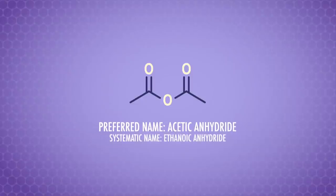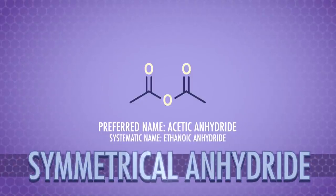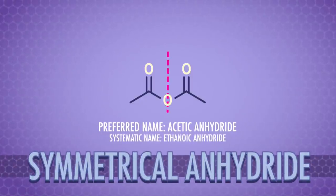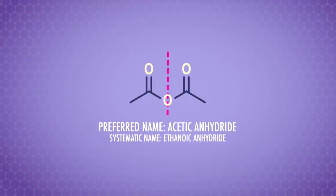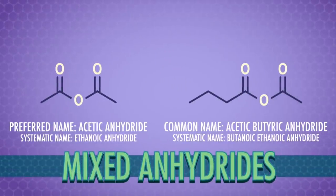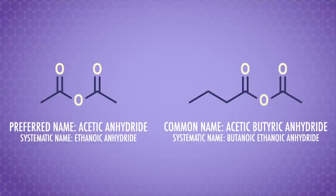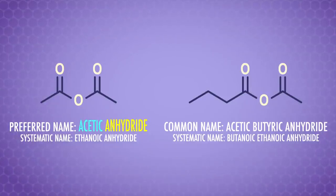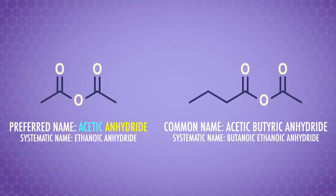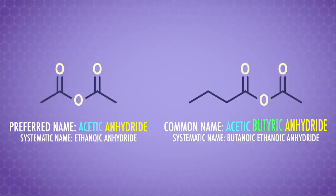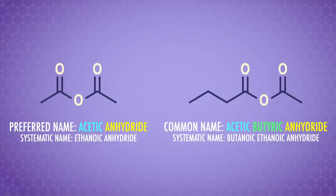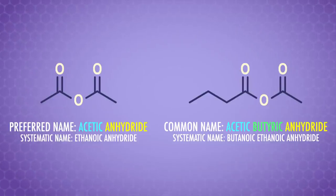For example, this reaction produces acetic anhydride, which is an example of a symmetrical anhydride, where the group attached to each of the carbonyl carbons is the same. We can also make mixed anhydrides, where the two groups attached to the carbonyl carbons are different. If the name only has two parts, like acetic anhydride, you know it's symmetrical. If the name has three parts, like acetic butyric anhydride, you know it's mixed. By the way, anhydride naming is one of the places where IUPAC lets some common names slide.